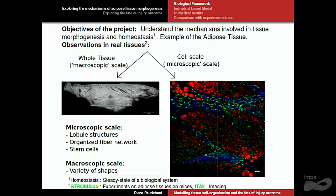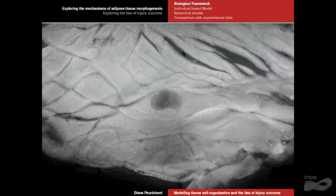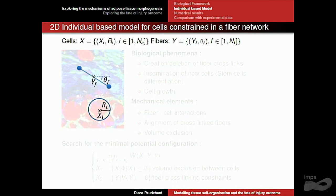This is what we did with the biologists. We defined heuristic rules, and I will now present our model, which we wanted to be as simple as possible. Our first hypothesis is that adipose tissue is composed of fibres and cells — these are the only agents we consider. A fibre is represented as a segment with a centre YF and an orientation angle theta F; it is rigid. A cell is supposed to be a 2D sphere with a centre XI and a radius RI.